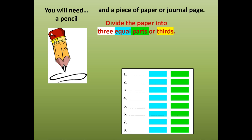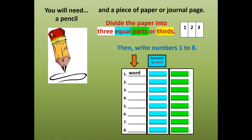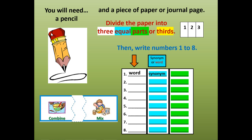You're going to divide the paper into three equal parts or thirds — one, two, three. Then you're going to write your numbers one to eight. For each number, you're going to write the vocabulary word. In the second column, you're going to write the synonym — a word that means the same. For example, combine is a synonym for mix. And in the third column, draw a quick picture or sketch to help you remember the word.